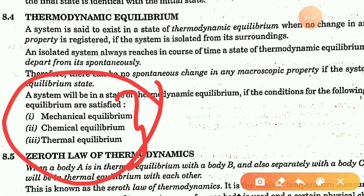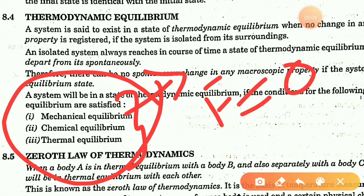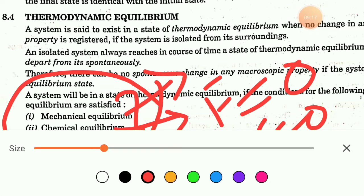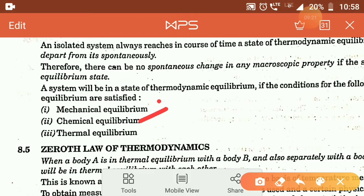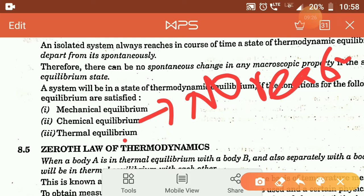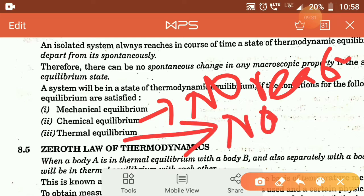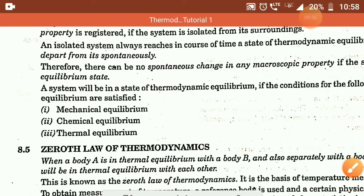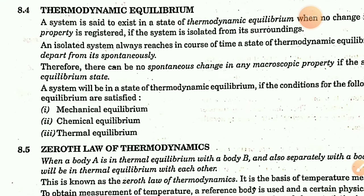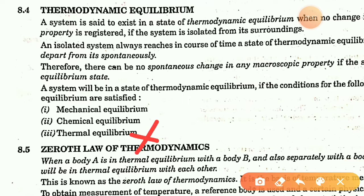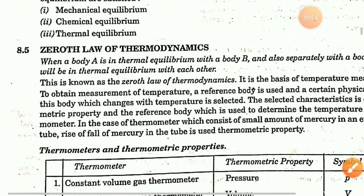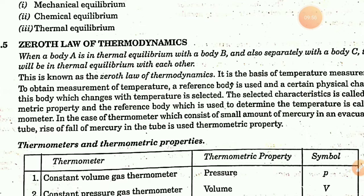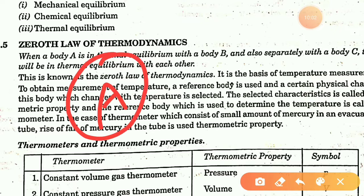Mechanical equilibrium means no net force — the net force is zero. Chemical equilibrium means no chemical reaction is occurring. Thermal equilibrium means no heat transfer. When all three are satisfied, the system is in complete thermodynamic equilibrium. If even one condition is not satisfied, the system is not in equilibrium.